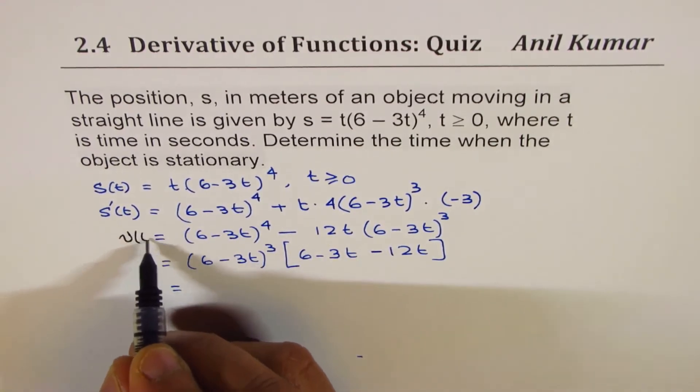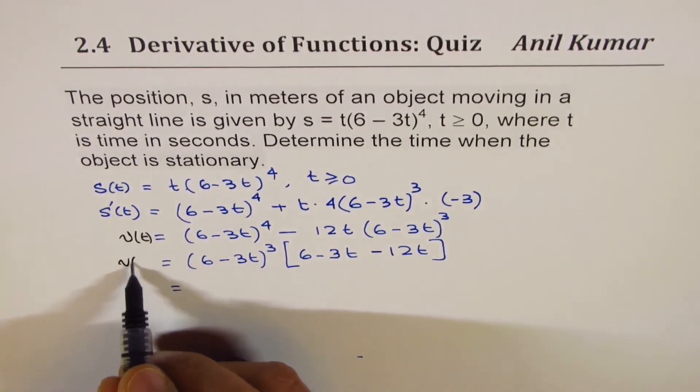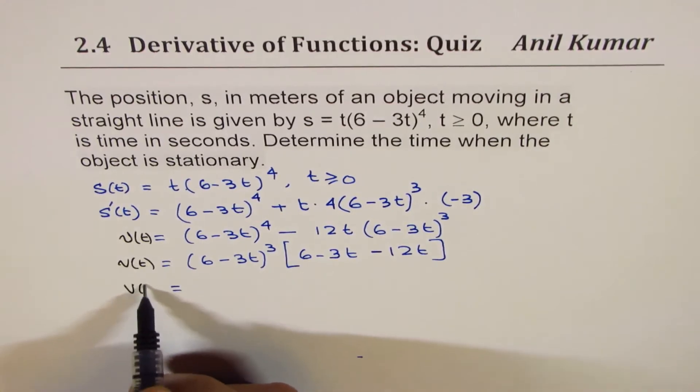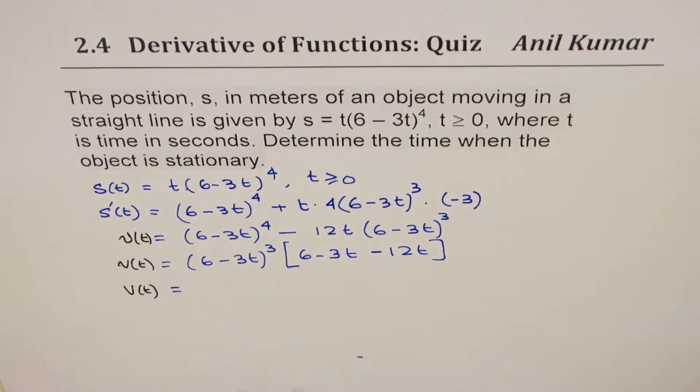And what are we getting on this side? Derivative is velocity. So we are getting velocity and for stationary velocity this has to be zero.